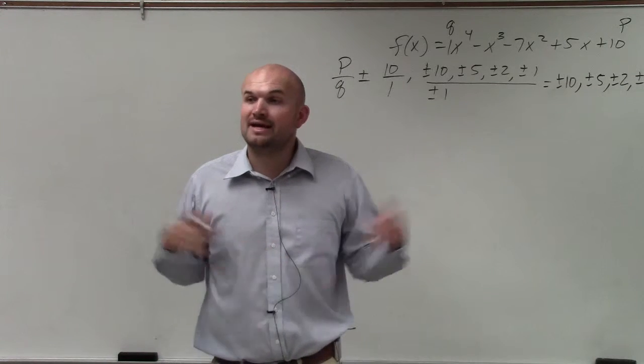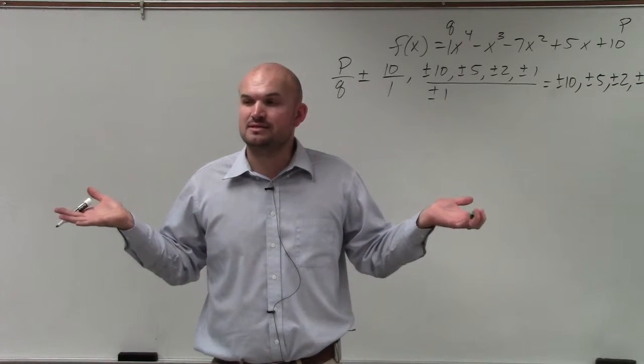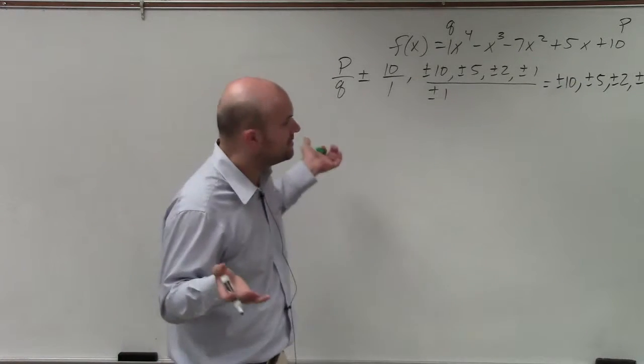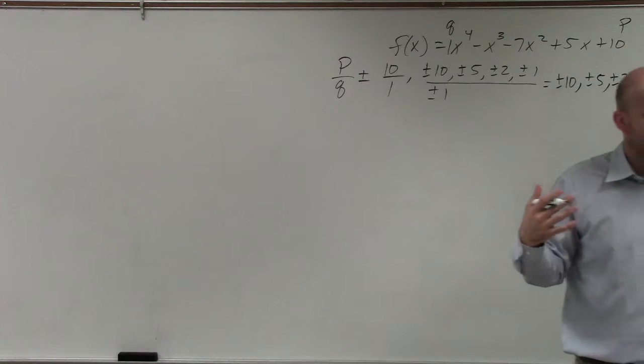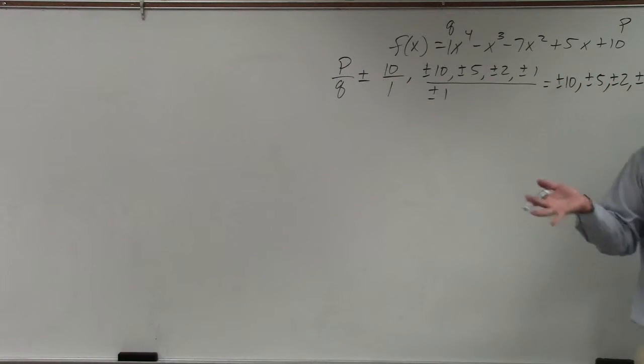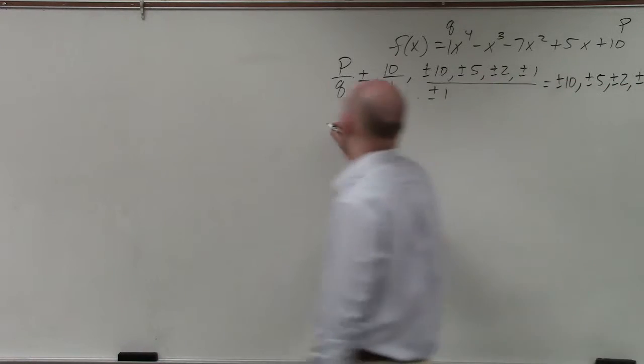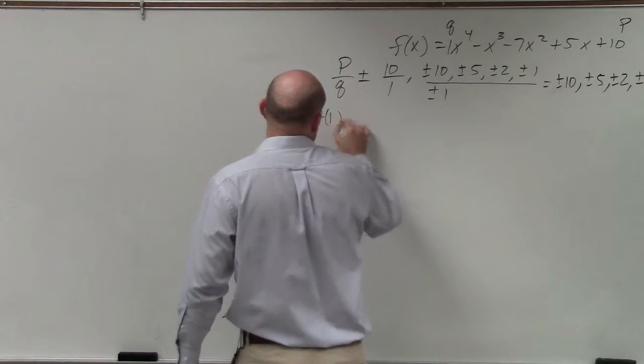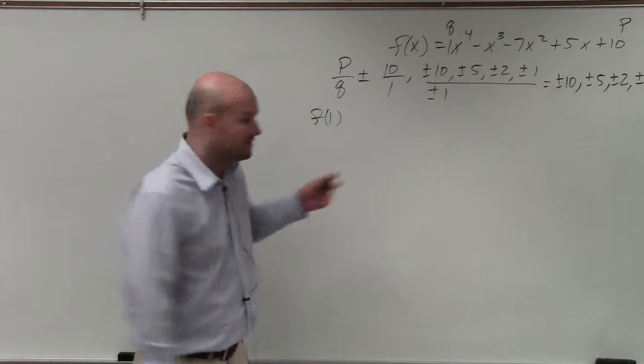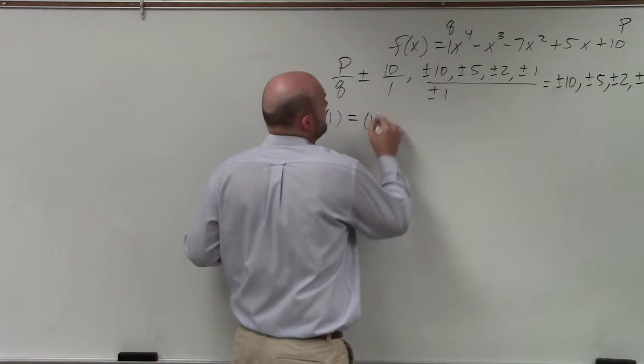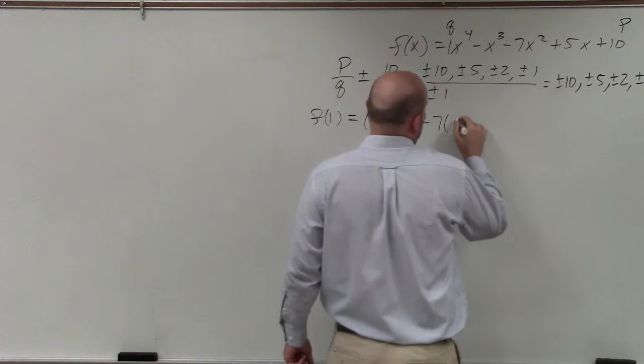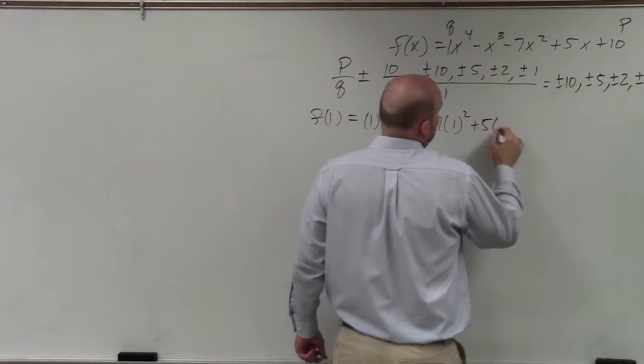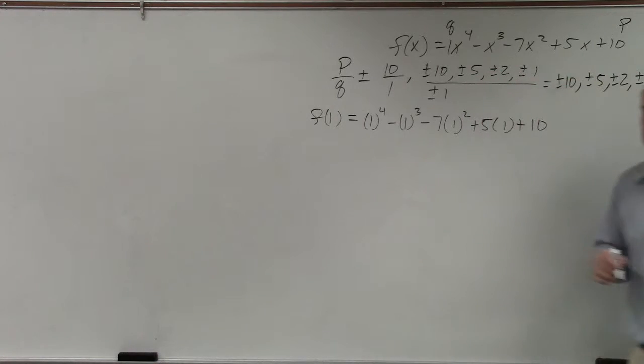Now, again, as I mentioned, there's two different ways that you can determine if a zero actually works, because these are just the possible zeros. We don't know if these zeros actually work. So the one way we could do, which we talked about, which Cayley represented, is we could use the remainder theorem. And if I plug in f of 1, the only way I know that this is a zero is if f of 1 equals 0. So let's plug in f of 1 and see what happens.